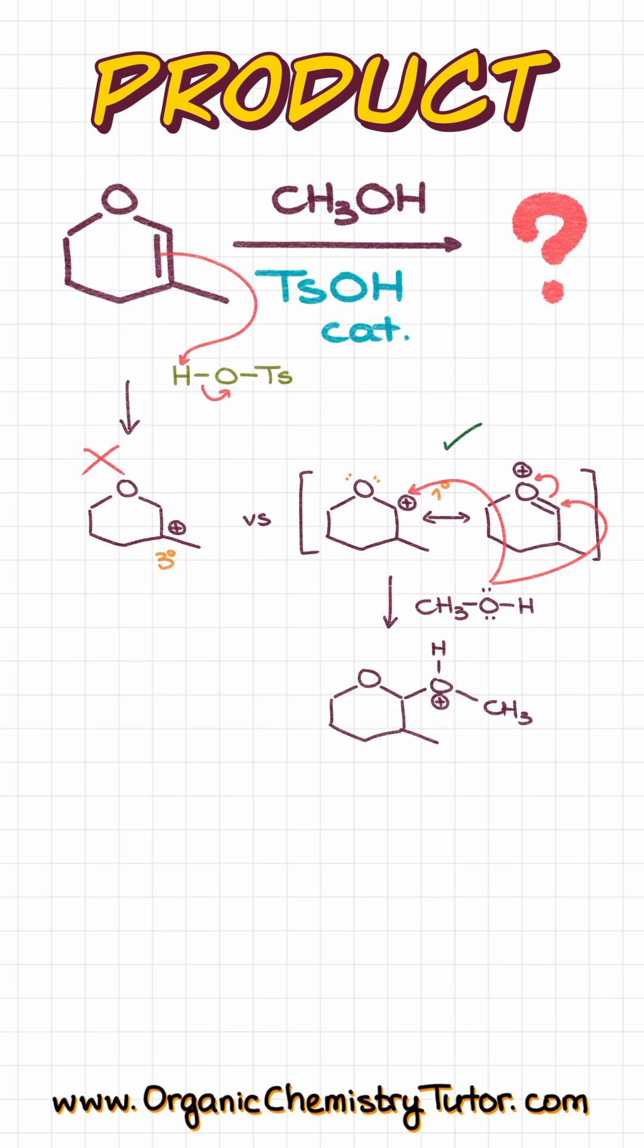This gives us the following protonated intermediate, which we are going to neutralize by using another equivalent of our methanol to pull that proton off, giving us the following final product. So, always remember to check for resonance for your carbocations, otherwise you can miss the correct answer.